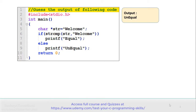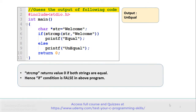Let's understand why we are getting 'unequal' as the output. Note that the strcmp library function returns the value 0 if both strings are equal. In this case the content of str and the other string is 'welcome', so the content is equal. That's why the function returns 0 and the if condition becomes false, so the else branch executes and displays 'unequal'.